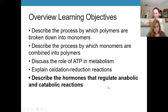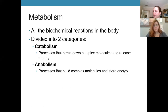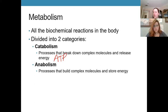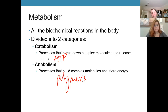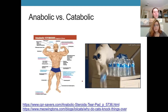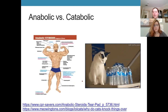Metabolism refers to biochemical reactions in the body, split into two categories: catabolism, where we break down complex molecules and release energy — primarily producing ATP — and anabolism, where we build complex molecules and store energy, making polymers like proteins, glycogen, and triglycerides.